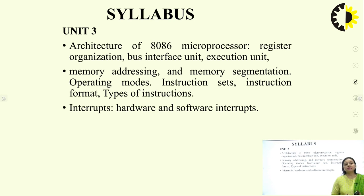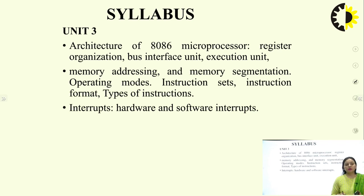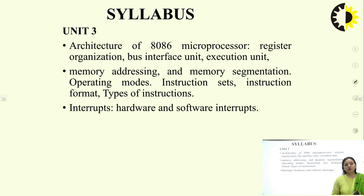Unit 3 discusses the 8086 microprocessor — its architecture, register organization, bus interface unit, execution unit, memory concepts, how memory is organized, memory segmentation, minimum and maximum modes, instruction format, and the description of all instructions related to 8086. The last topic covers hardware and software interrupts of 8086.